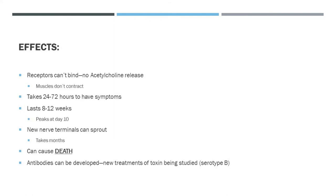Now that we've gone over the mechanism by which botulinum toxin affects the body, let's take a look at the actual effects themselves when someone contracts this poison. The receptors can't bind and the acetylcholine is not released, so muscles don't contract and don't respond to nerve impulses. It usually takes about 24 to 72 hours to have symptoms. The effects are long-lasting — 8 to 12 weeks — and it peaks at day 10. While new nerve terminals can sprout, it usually takes about three to four months, and this is why it can cause death.